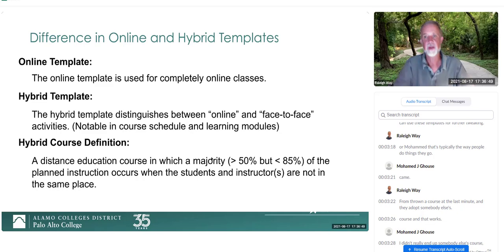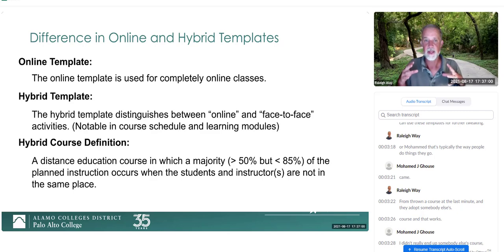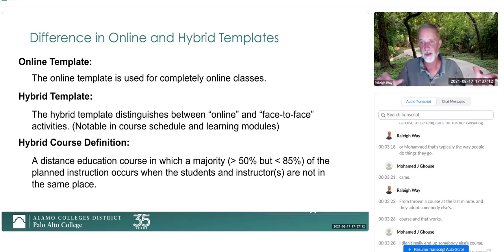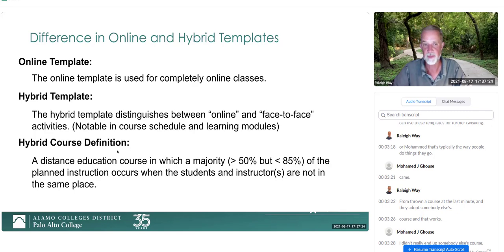The online template is used for completely online classes. There is also a hybrid template, which is built to accommodate a combination of online and face-to-face — a blend of the two. For the definition of a hybrid course, coming down from the state: a distance education course in which the majority of the planned instruction occurs when the students and instructors are not in the same place — more than 50% but less than 85% is online.